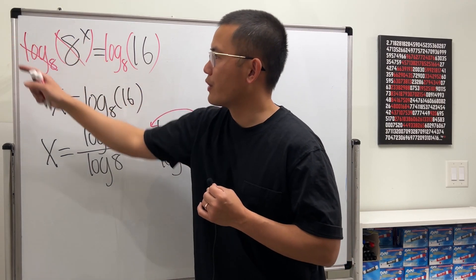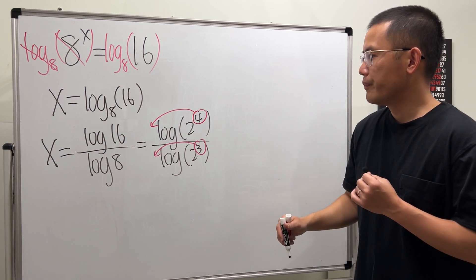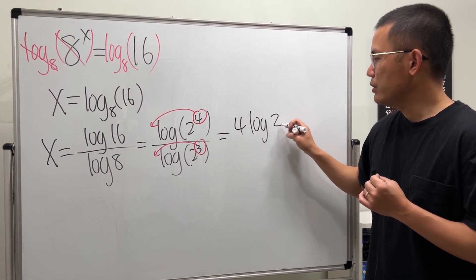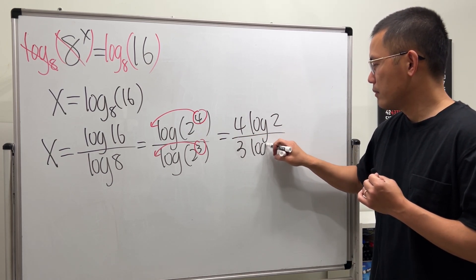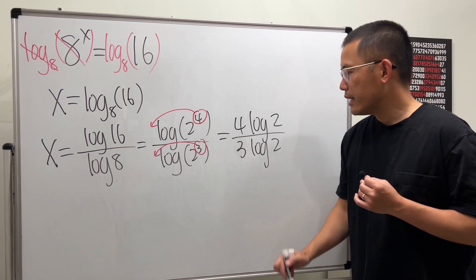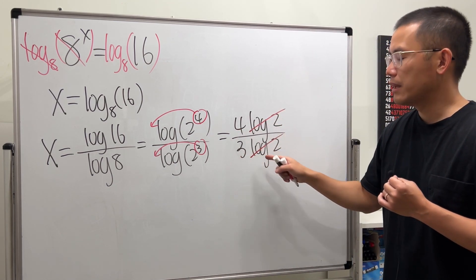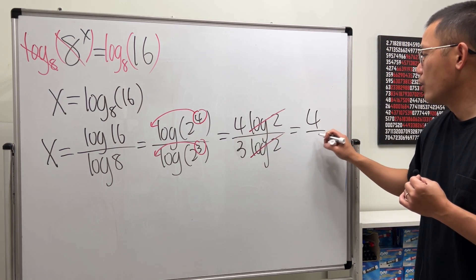We could put the x to the front, and log 8 of 8 is just 1. So we are doing that right here as well. So this becomes 4 times log 2 over 3 times log 2. And right here, notice log 2 log 2, because 4 times this, 3 times that, so we can reduce this out. So the final answer is 4 over 3.